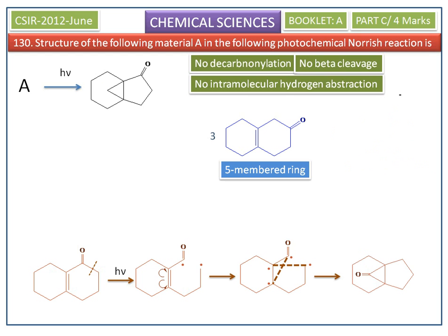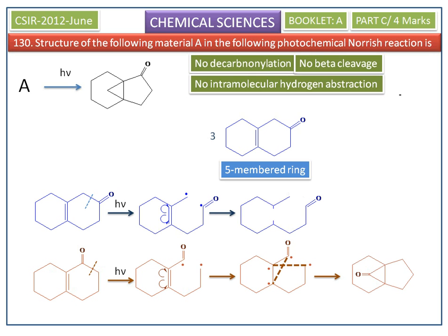Now we do alpha cleavage in the third compound. During irradiation, it gives di-radicals. Cleavage then occurs at the olefin bond, giving new di-radicals. These di-radicals are recombined to give a new product. This product matches the product given in the question, so A is the third option.